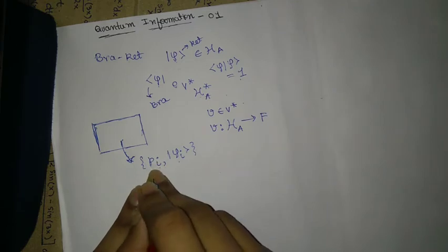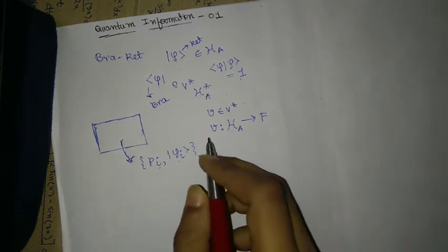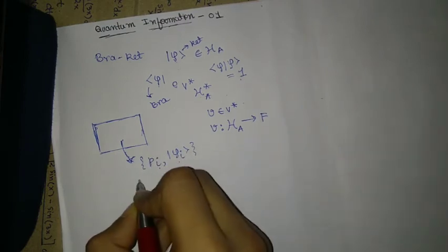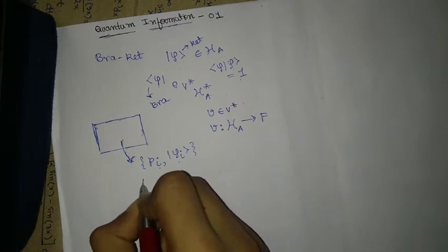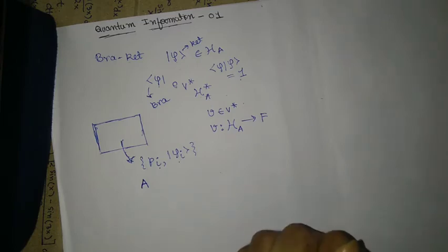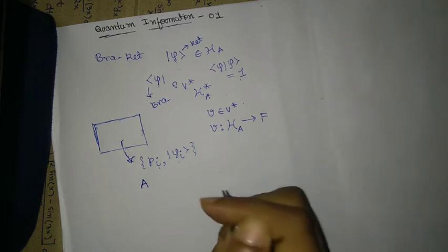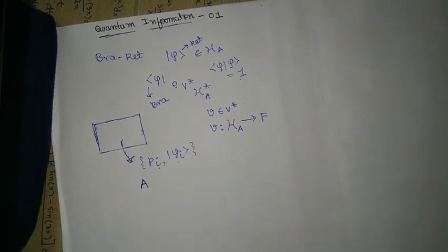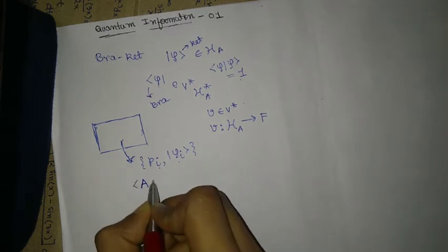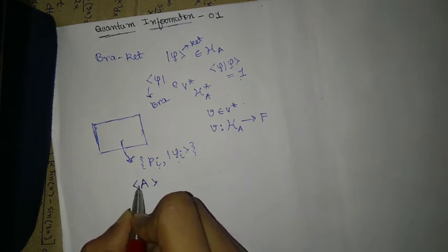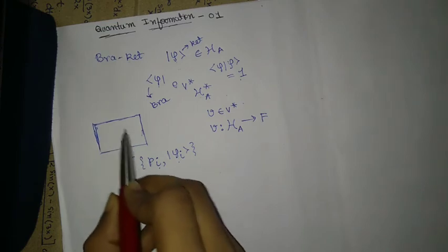One of the natural questions to ask is: given a linear operator A that maps vectors in the Hilbert space to vectors in the Hilbert space, what will be the expectation value of A when the experiment of measuring A is performed on the elements of this box?